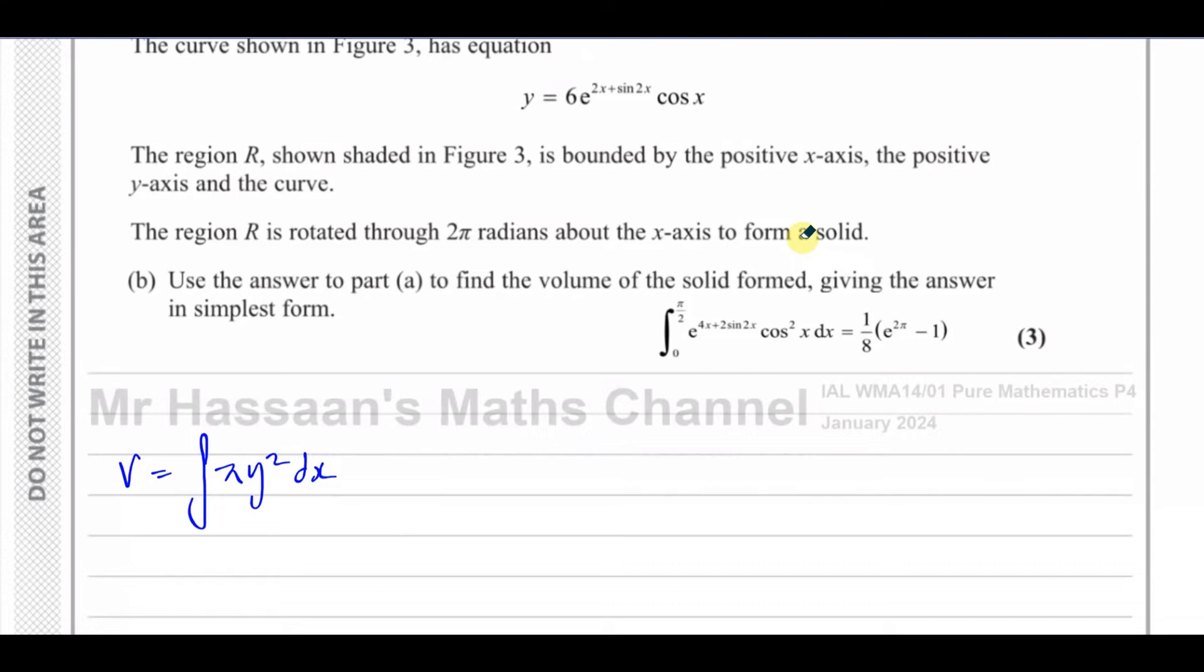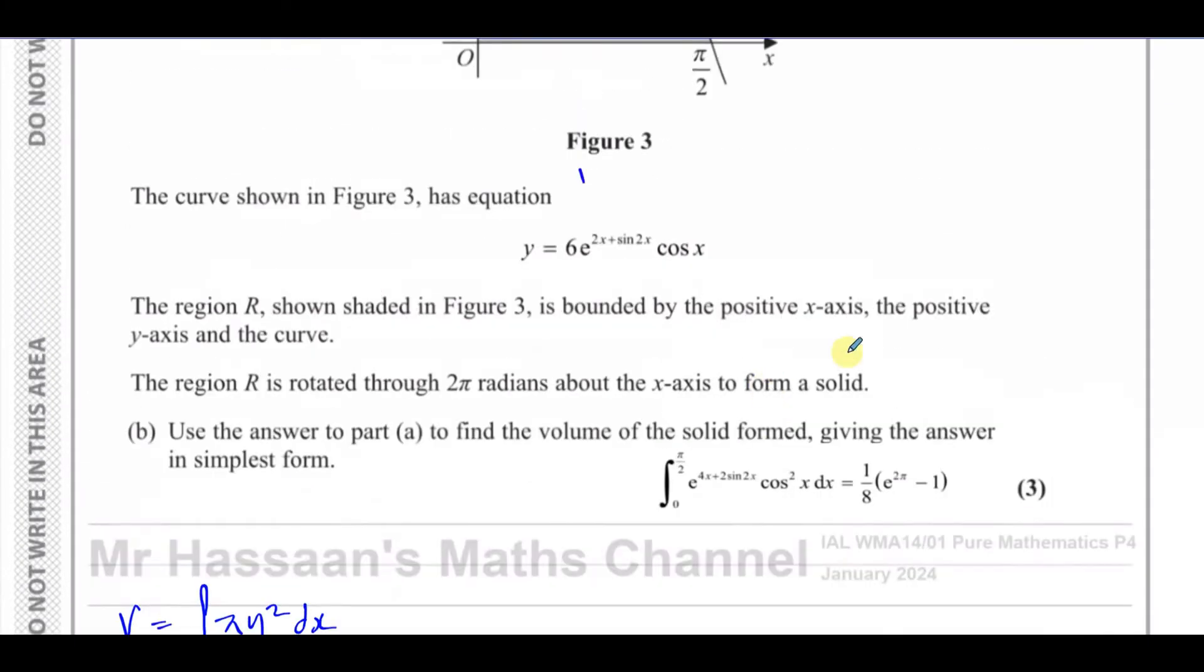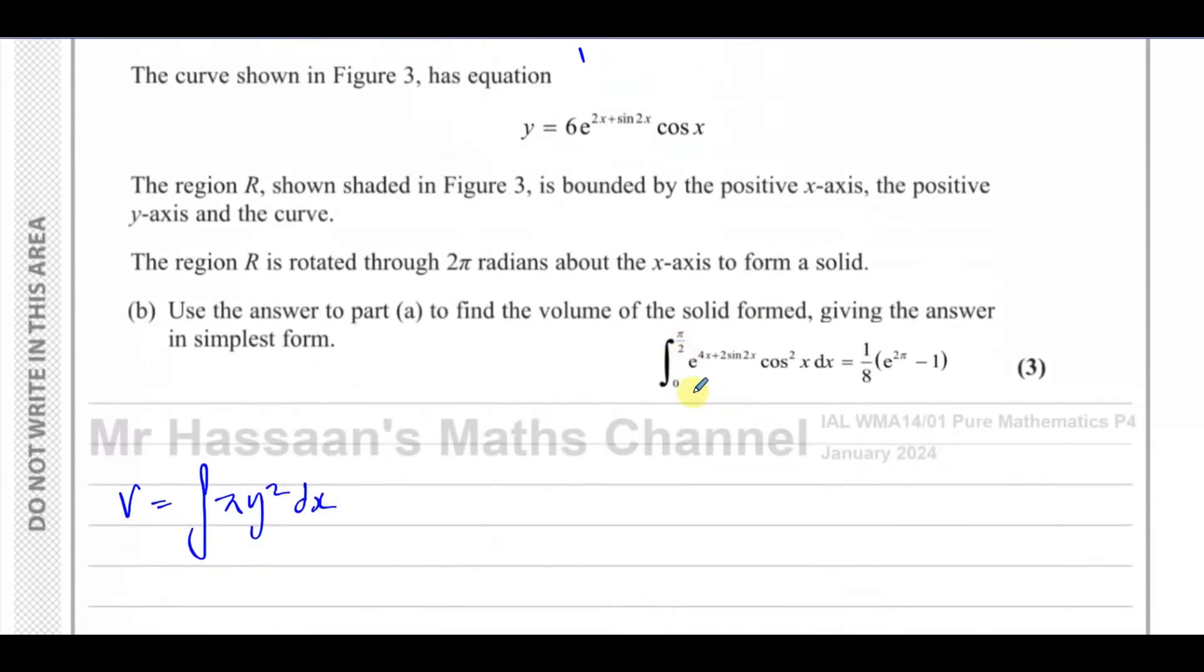In this case, we have our limits between 0 and π over 2, just like in that answer. So we have V equals the integral between 0 and π over 2 of πy² dx. I'll write the π on the outside. We're going to have y squared, which is 6e to the power of 2x plus sine of 2x times cosine x, squared.